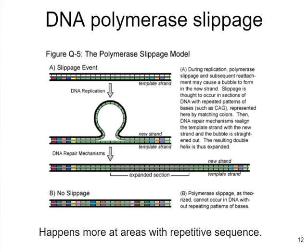When that bubble forms, the DNA polymerase will try to adjust — it will actually back up in response to the bubble and redo its synthesis. But as it goes through that effort, it doesn't remove the bubble; it just copies the bubble and therefore extends or expands that particular strand of DNA. This is one of the ways you can get an insertion in DNA during synthesis.